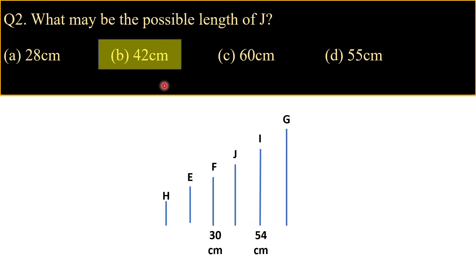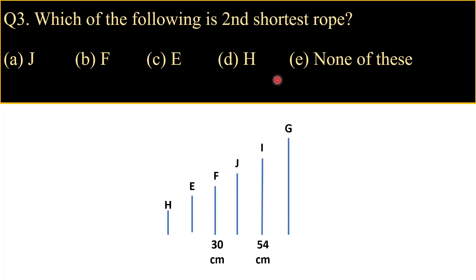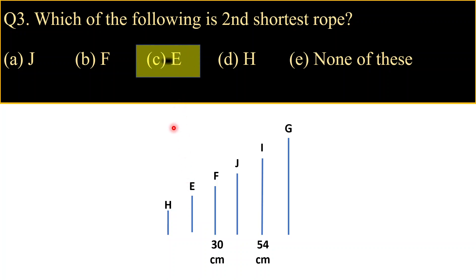It's easy but you need some practice to master this. Let's move on to the next question: which of the following is the second shortest rope? Looking at the arrangement, H is the first shortest and the second shortest rope is rope E. So our answer is option C, which is rope E.